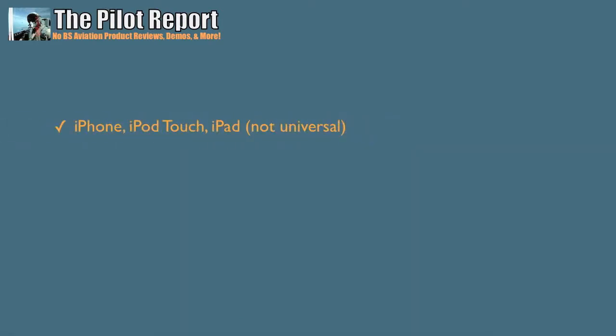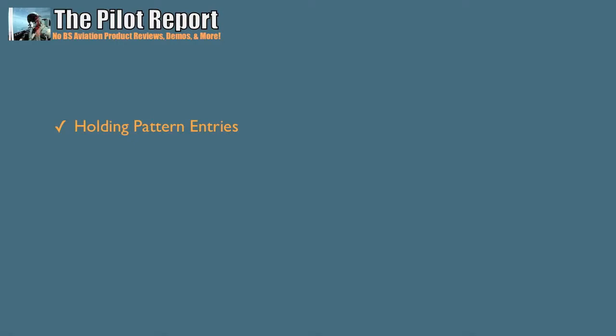This application is iPhone, iPod Touch and iPad compatible, however the iPad version is not universal, so when you do use it, it will be in that smaller format. It's very simple to use and has a great user interface. Now in just a moment in the user demonstration video you'll see me struggling to use the application, but I'm not so sure that's a design flaw as much as it is me and my big fat fingers. The application is used for calculating your holding pattern entries based on your inbound radial and your heading, and it will also help you calculate your bug out time to determine how long you can remain in that holding pattern based on your current fuel on board and your current fuel flow — to tell you that you can hold for a certain amount of time before proceeding to your destination, then your alternate, plus your 45-minute fuel reserve. It's an excellent value at $1.99.